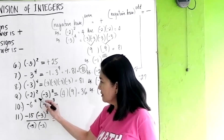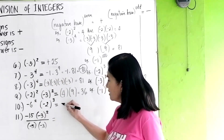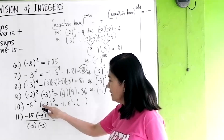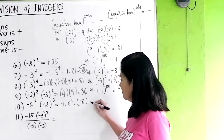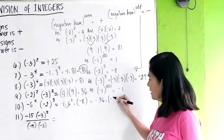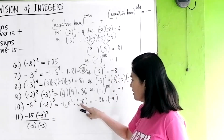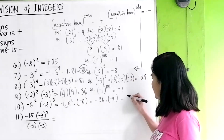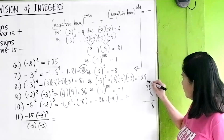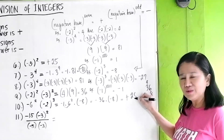What about this? There is a negative outside, so the result is negative 36. Because this means negative 1 times 6 squared, times negative 2 cubed — which is negative 8. So you have negative 36 times negative 8. Negative times negative gives positive. 36 times 8: 8 times 6 is 48, carry 4; 8 times 3 is 24 plus 4 is 28. So your answer is 288.